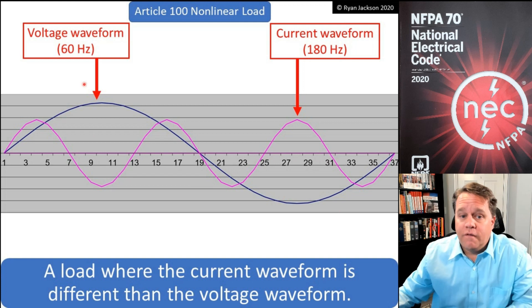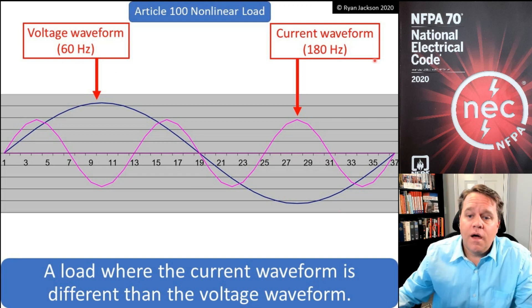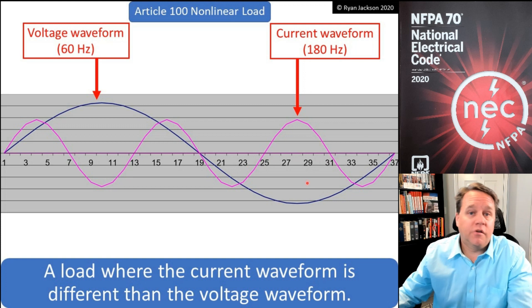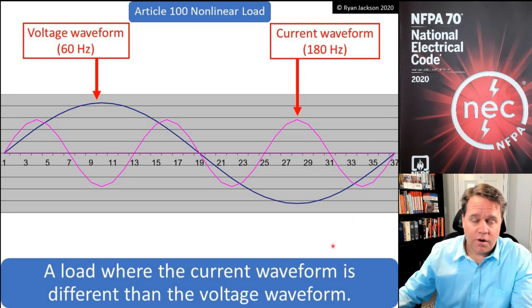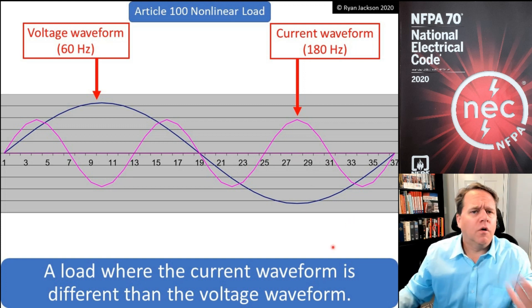...would call the fundamental sine wave. If the fundamental is 60 hertz and we have 180 hertz, that's three times the fundamental, so that's a third order harmonic. We can have third order harmonics, fifth order harmonics, all sorts of different harmonic loads.